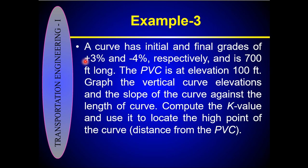Before starting, I want to tell you that this example has been taken from chapter 3, geometric design of highways, from the book 'Principles of Highway Engineering and Traffic Analysis' written by Fred L. Mannering. In this example, a curve has initial and final grades of plus 3 and minus 4 percent respectively, and is 700 feet long.